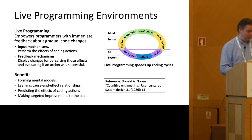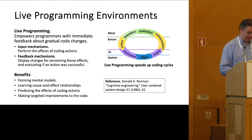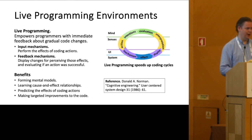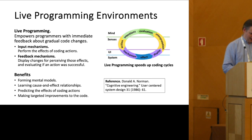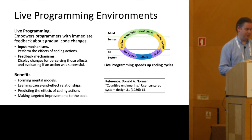The idea is that live programming speeds up these cycles, and it has compelling benefits. Namely, you form mental models, your predictions become more accurate, and you learn cause and effect relationships. This is very important for live programming — you actually see why something happens, and you can ask why questions about it. That allows you to predict the effects of your coding actions and make targeted improvements to the code.